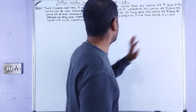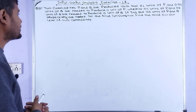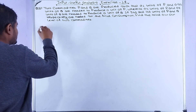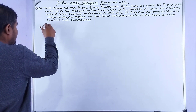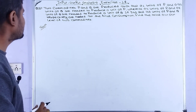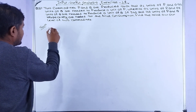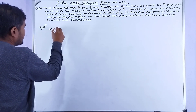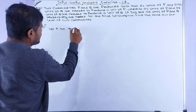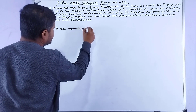Now we need to find the total output. Looking at the solution, first we need to set up the technology matrix, which we'll call matrix A.